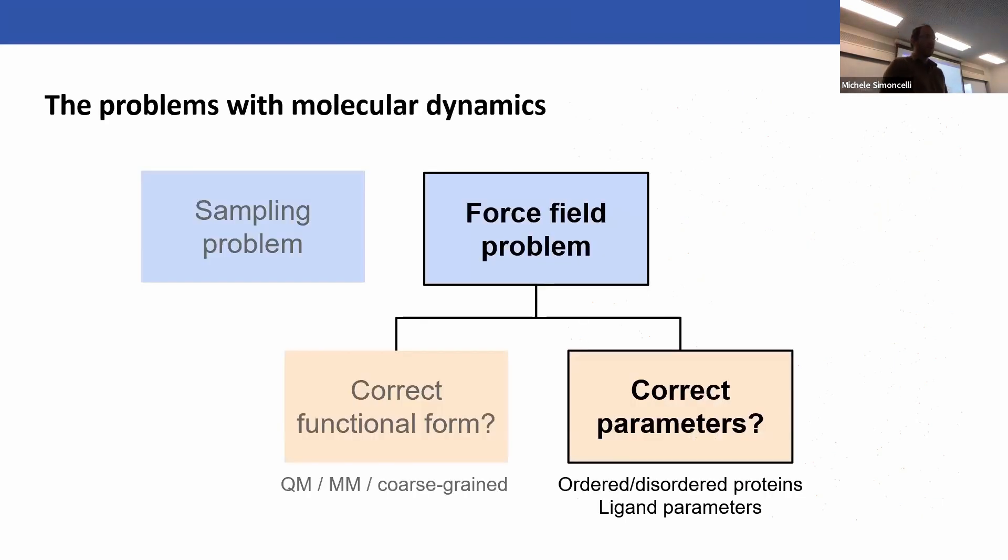But there are problems with molecular dynamics. You can split them into two broad categories. The first is the sampling problem. Most biological processes happen on the millisecond timescale, seconds, or even years when it comes to protein aggregation. But when you simulate on commercial hardware, you can only get to microsecond or millisecond routinely, so there's a clear problem there.